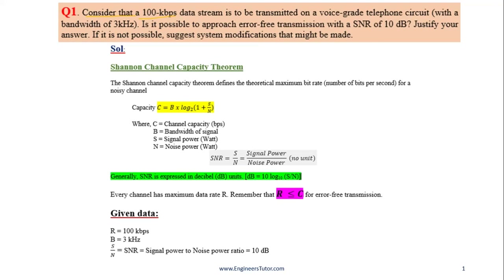Question one: a 100 kbps data stream is to be transmitted on a voice-grade telephone circuit with a bandwidth of 3 kilohertz. It is asking: is it possible to approach error-free transmission with a signal-to-noise ratio of 10 dB? Justify your answer. If not possible, suggest system modifications that might be made.